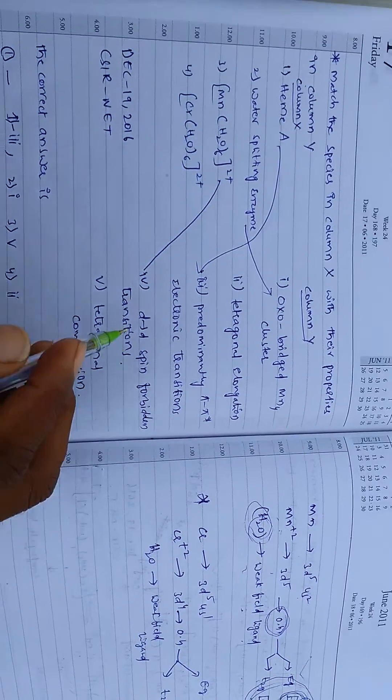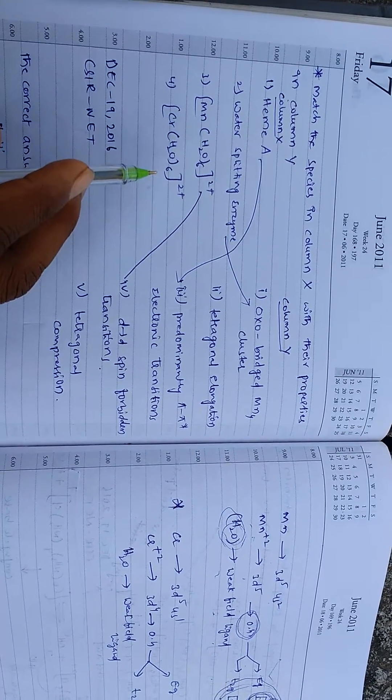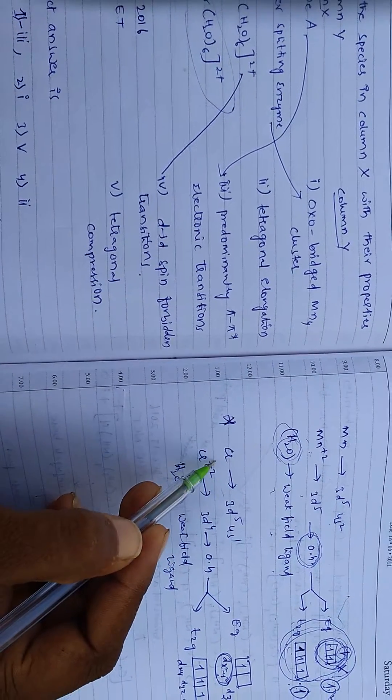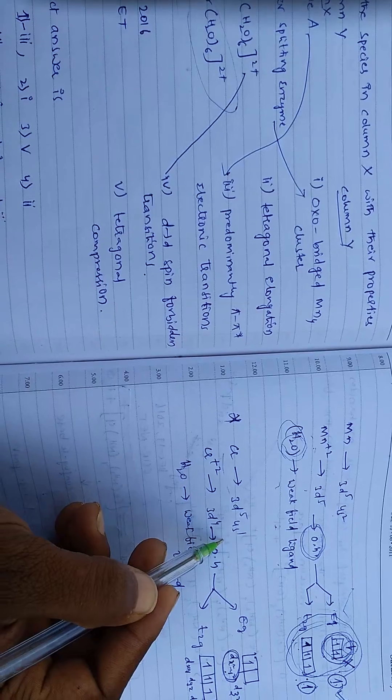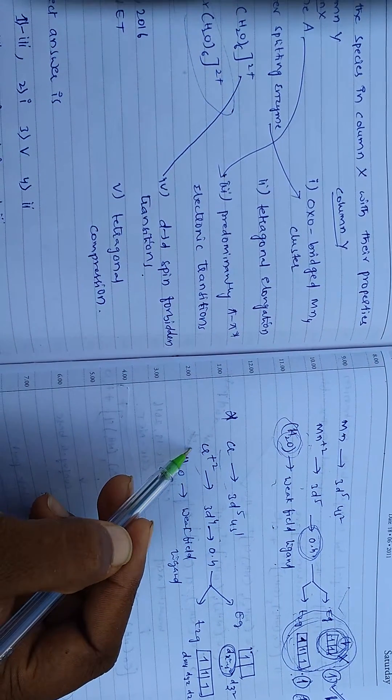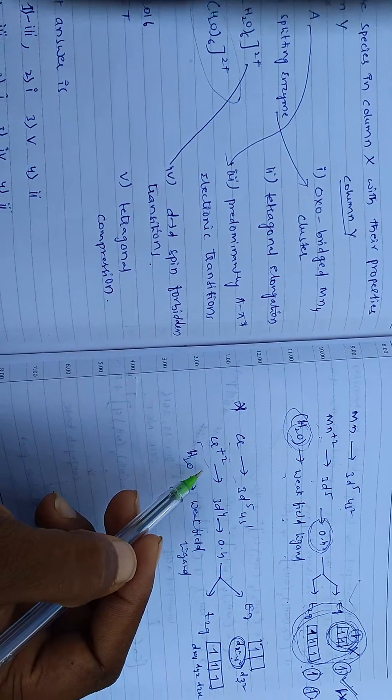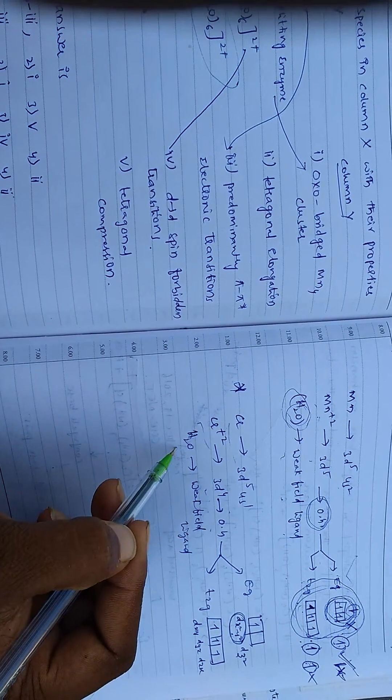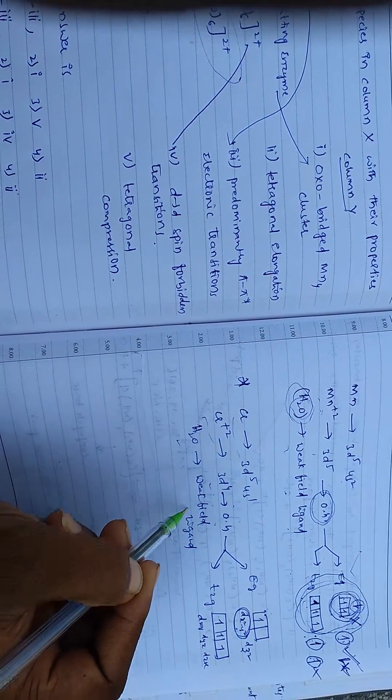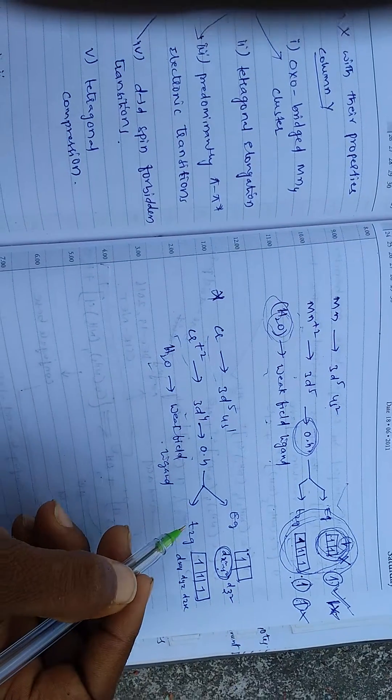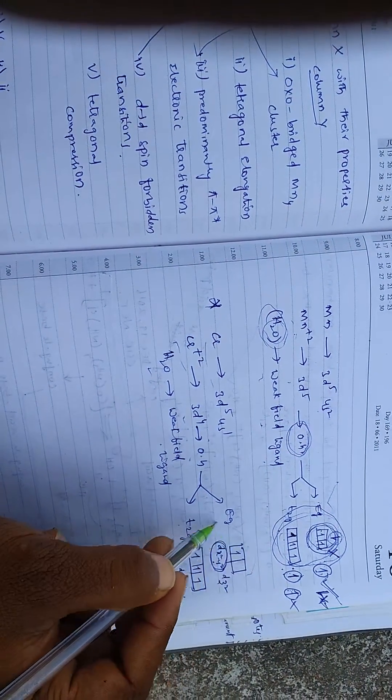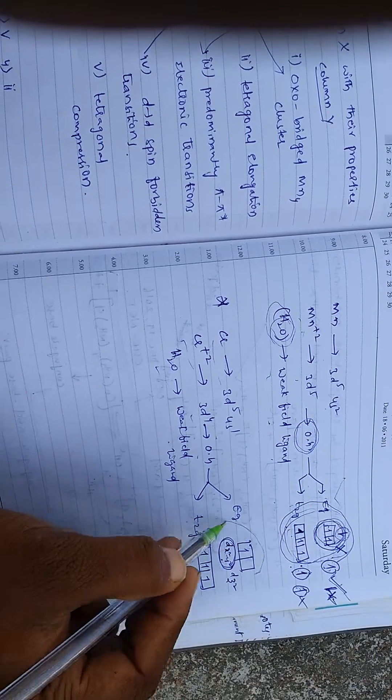Next one, chromium hexa aqua complex. This chromium hexa aqua complex is octahedral. In this complex, chromium has 3d5 4s1 electronic configuration. In the given complex, chromium has plus-2 charge, meaning it has 3d4 electrons. It is octahedral with water as a weak field ligand, and it splits into T2G and EG levels. This is high spin, so electrons are arranged like this.